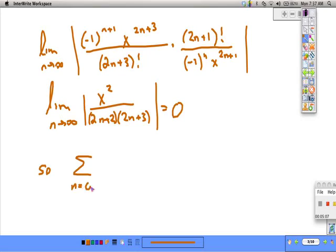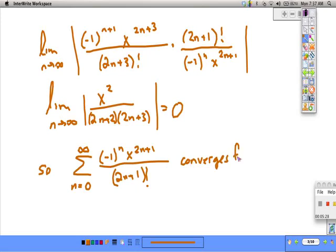So this series n equals 0 to infinity, negative 1 to the n, x to the 2n plus 1 over 2n plus 1 factorial, converges for all x. But here's the tricky thing.